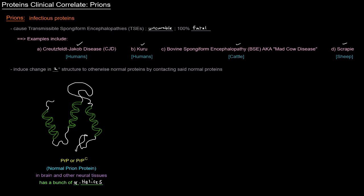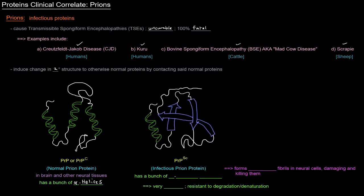Now, there's another version of PRP, which is called PRP^SC. And I think the SC stands for or comes from scrapie, which is the disease in sheep caused by the prion protein. And this PRP^SC is the infectious prion protein. And it, instead of having a bunch of alpha helices, it has a bunch of beta-pleated sheets. And because of that, the beta-pleated sheets are hard to degrade. This PRP^SC is very, very stable. And it's resistant to degradation or denaturation.